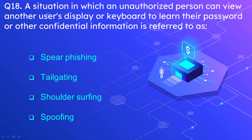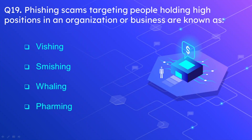Question number 18: A situation in which an unauthorized person can view another user's display or keyboard to learn their password or other confidential information is referred to as what? The options are spear phishing, tailgating, shoulder surfing, and spoofing. The correct option is shoulder surfing.